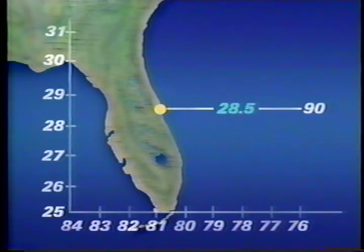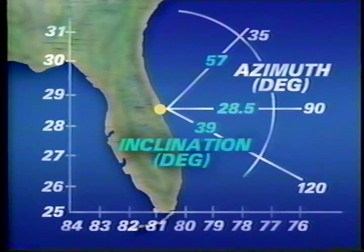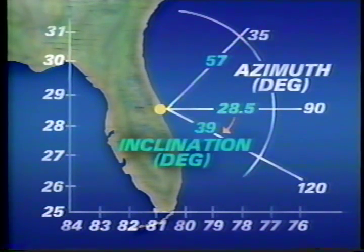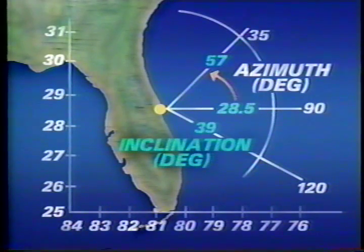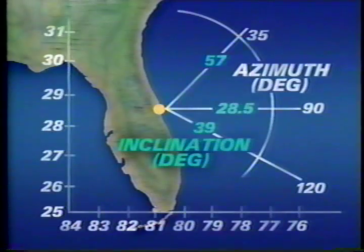If the launch azimuth — the direction of flight at launch measured eastward from due north — is increased from due east, the orbital inclination angle increases as well as the maximum latitude of the north-south ground track. Similarly, if launch azimuth is decreased from due east, orbital inclination again increases along with the latitude limits. The maximum practical inclination from a Kennedy Space Center launch is 57 degrees, a limit imposed for safety to keep the spacecraft and booster from flying over landmasses during the ascent phase.